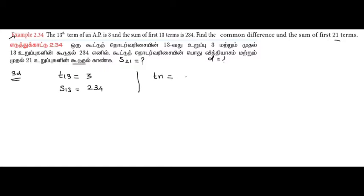If we use the tn formula, then tn equals a plus n minus 1 into d. And the sum formula will be equal to n by 2 into 2a plus n minus 1 into d.